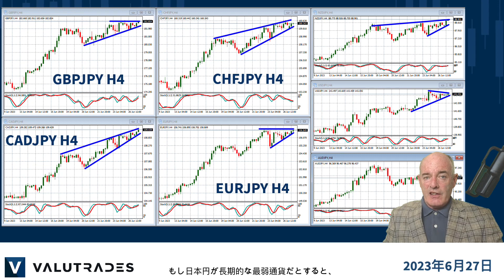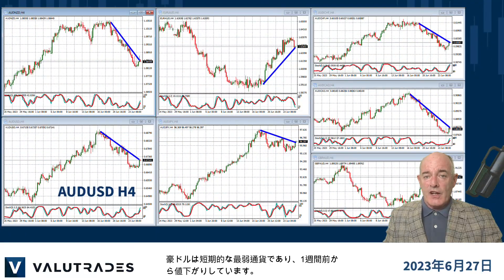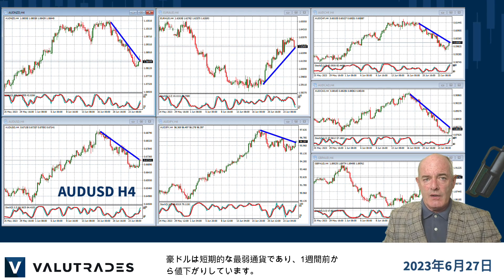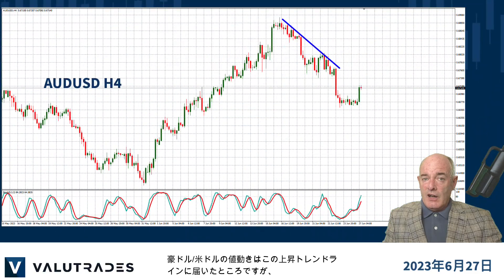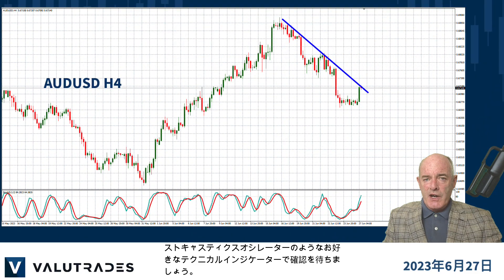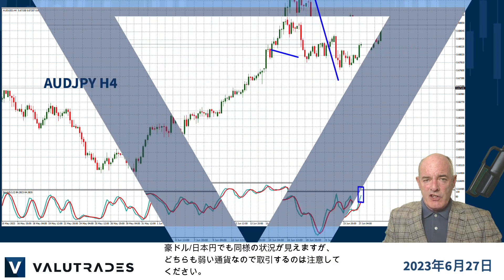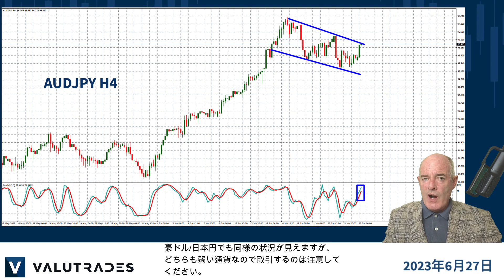If the Japanese Yen is the weakest long-term currency, the Australian Dollar is the weakest short-term currency with values falling for one week now. In fact, we can see quite a few short opportunities. Price action on Aussie Dollar has just reached the upper trend line, but wait for confirmation from your favourite technical indicators like the Stochastic Oscillator. We see the same situation on Aussie Yen, but be aware of trading two weak currencies together.